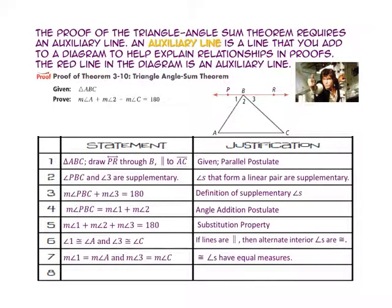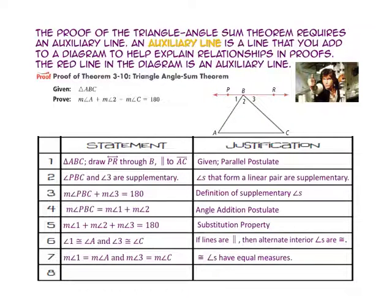Finally, we will use the substitution property and state that the measure of angle A plus the measure of angle 2 plus the measure of angle C equals 180 degrees.